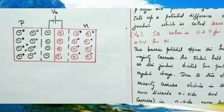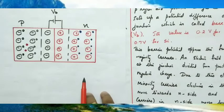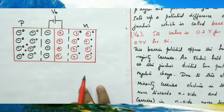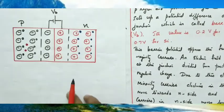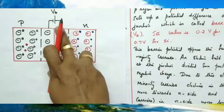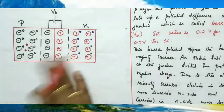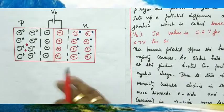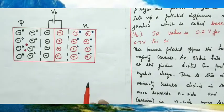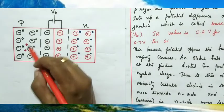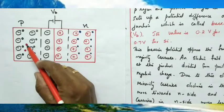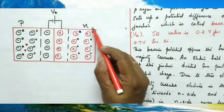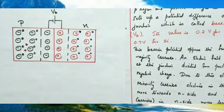During the diffusion process there is no need to consider minority carriers, because the majority carriers dominate. But after the formation of the depletion layer and the barrier potential, majority carrier motion is completely stopped. Now, minority carriers begin to move. In the P region there are minority carrier electrons, and in the N region there are minority carrier holes.